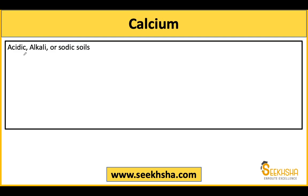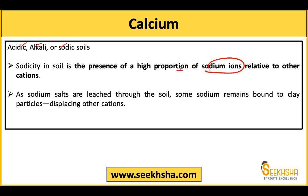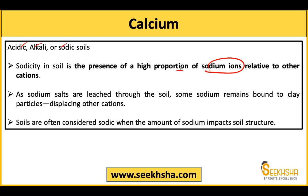For calcium deficiency, if you have acidic, alkaline, or sodic soils, you will see calcium deficiency. Sodic soils are soils where sodium ions are present in a much higher proportion compared to other cations. The sodium salts leach into the soil through water, but the sodium ions remain in the soil because clay particles of the soil adsorb them, and the other cations get displaced.